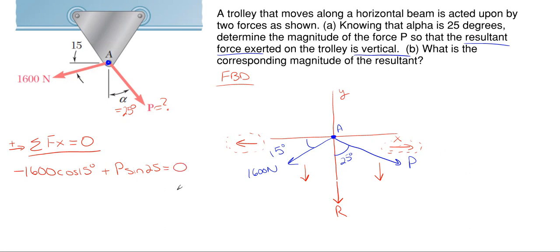Well, looking at this equation, P is my only unknown in here, so I can just rearrange for P, which is just 1600 cosine of 15, divided by the sine of 25. And that gives me 3656.9 Newtons in that downward right direction. Well, there's one of my answers, that's part A, done.